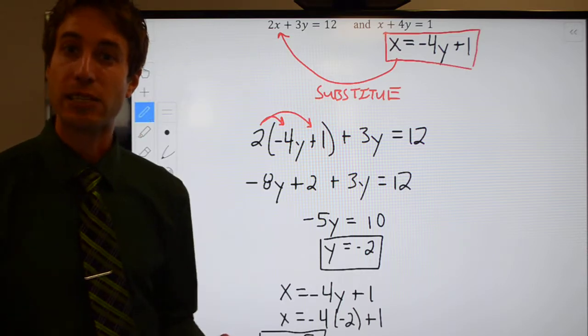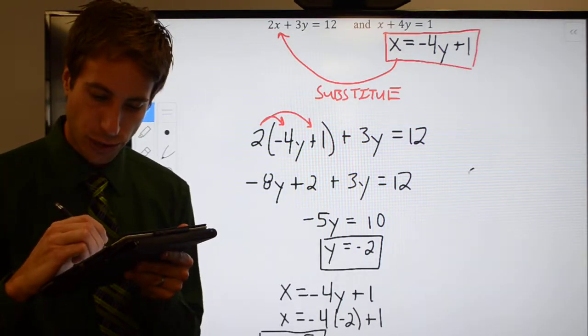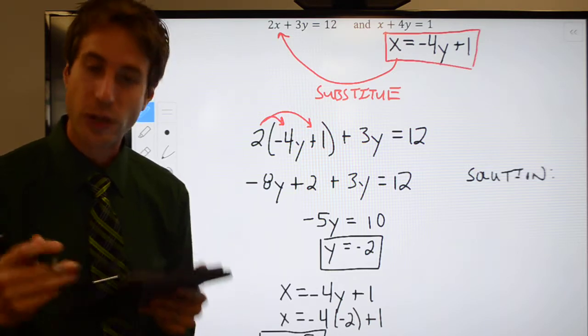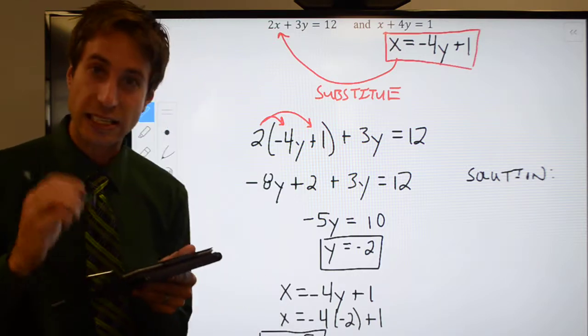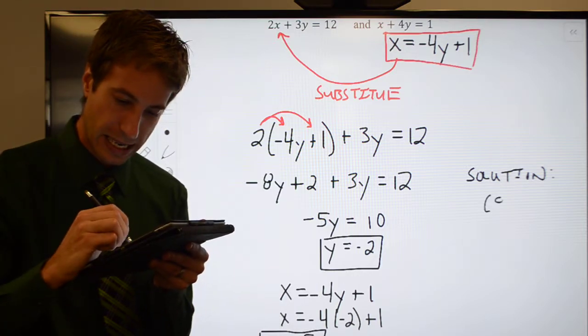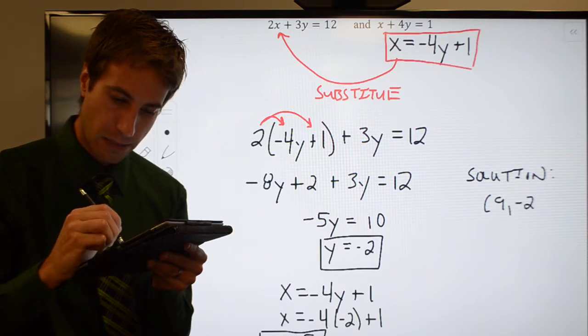Now what I've found is my solution. Remember, your solution for a system of equations is going to be an ordered pair. It is the ordered pair x comma y. So in my case, that would be 9 minus 2.